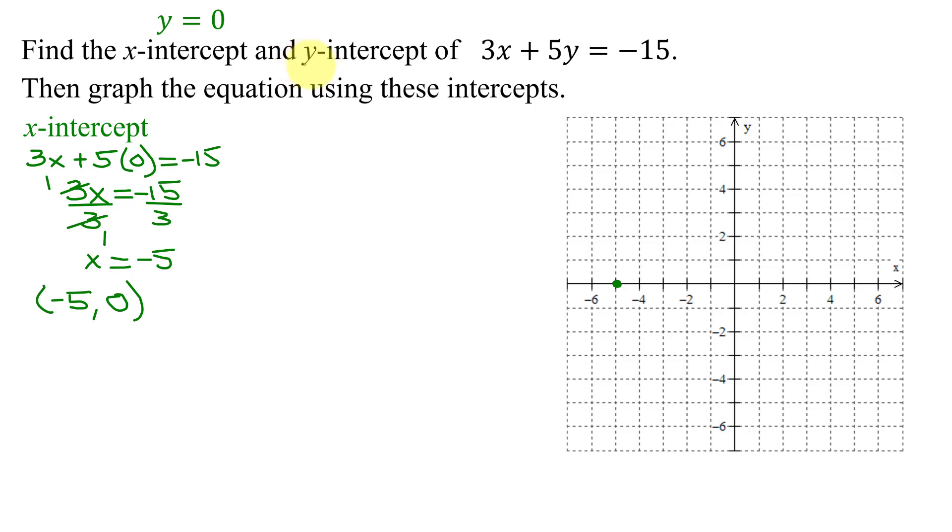Next, I need to find the y-intercept. So quickly reviewing, how do we find the y-intercept? You set x equal to 0 in this equation. So you're going to get 3 times x, which is 0, plus 5y equals negative 15.